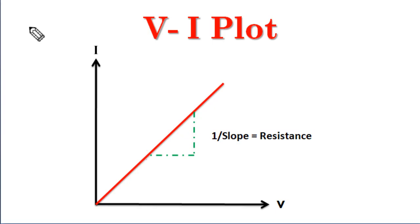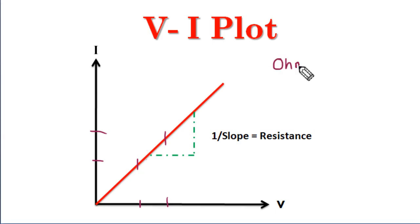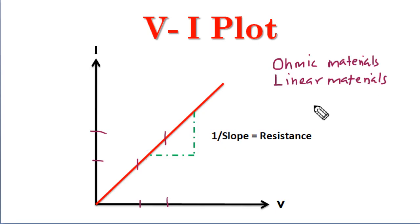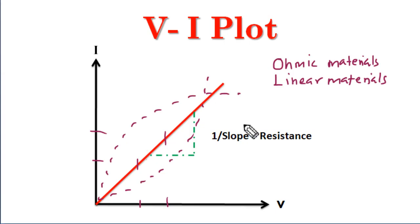Here you can see the voltage-current plot of Ohm's law. Ohm's law states that when the potential difference across the conductor increases, current increases, so there is a linear relationship between voltage and current in materials that obey Ohm's law — we call these Ohmic materials. However, some devices have a V-I plot that is non-linear, so they are not considered Ohmic materials. Their voltage and current are not proportional, so we cannot say that Ohm's law is a universal law.